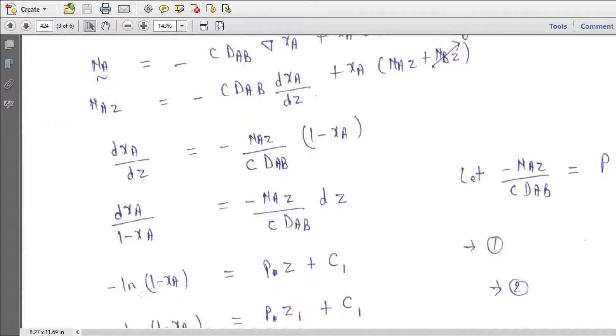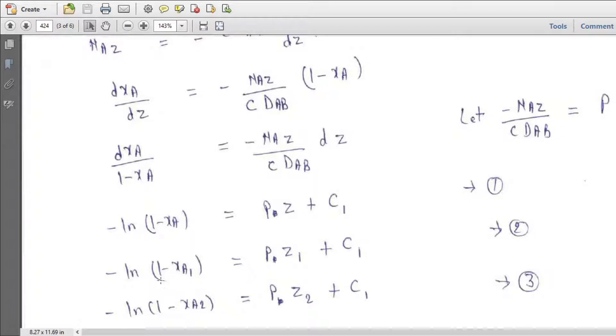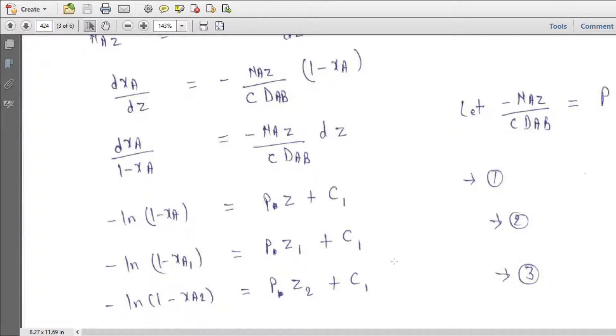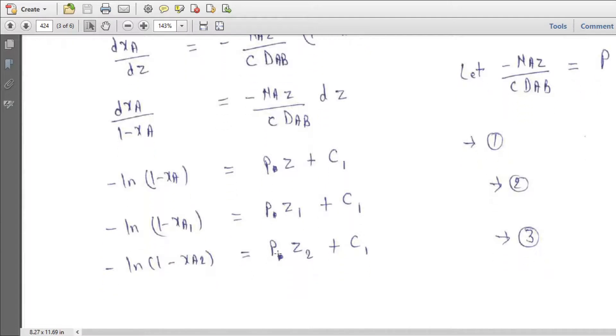So minus ln 1 minus XA equal to P Z plus C1. So this we can write it here. So then we can write, substitute the conditions here at Z1, so this is XA1, C1, and minus 1 minus XA2, Z2 plus C1 here. So we can actually solve it.